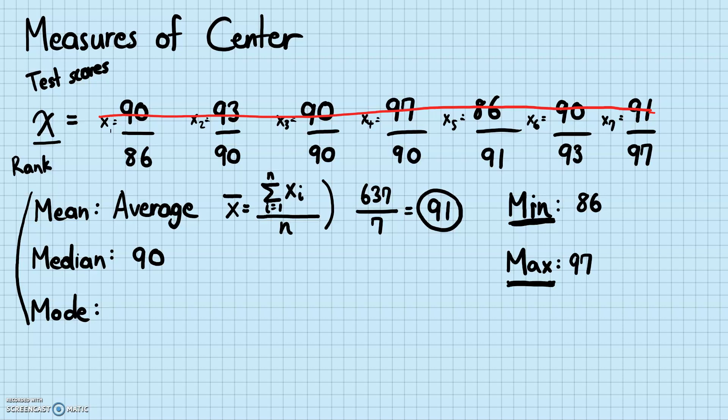Finally, the mode. Mode is the easiest to calculate because there's really no calculation involved. For the mode, it's also better if you rank your data first. The mode is the number that occurs the most times. In this case, we have three 90s, while all the other numbers come up only once. So the mode is 90, because it occurs the most times.